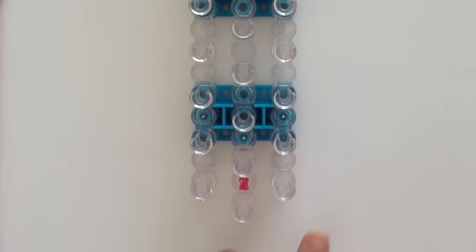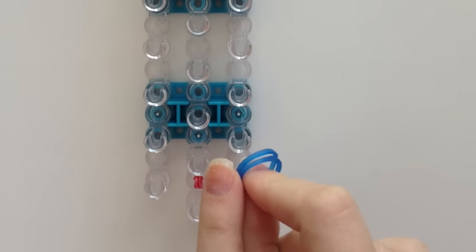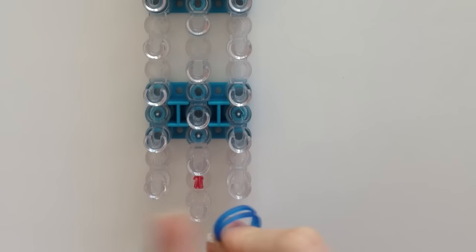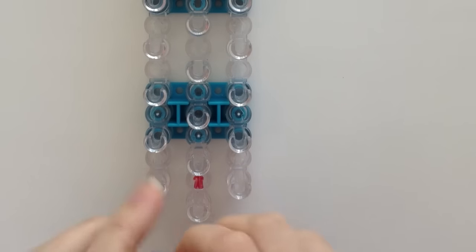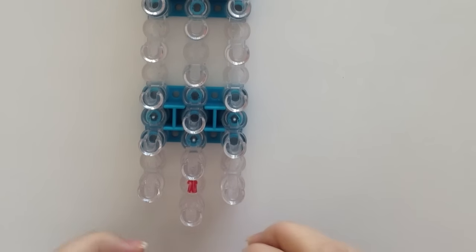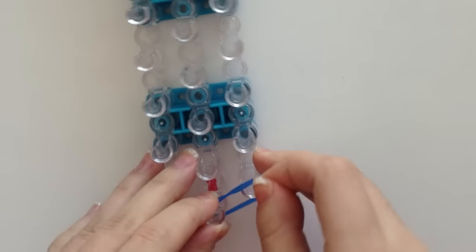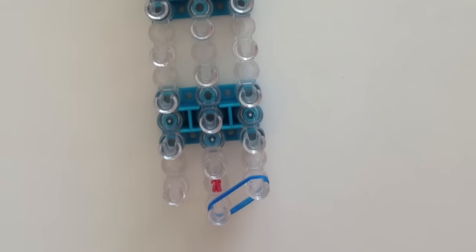Start with your loom in this original configuration. Now I'm taking two blue rubber bands at a time. For this entire design I'll be using pairs of rubber bands. So begin by going from the center peg to the first right peg, and then the center peg to the first left peg.